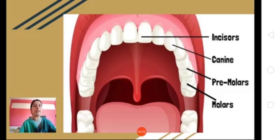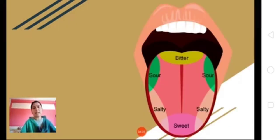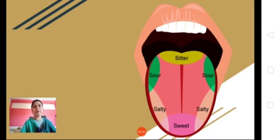You can see the position and types of teeth present inside the buccal cavity. Along with the salivary glands and teeth, we also have a muscular organ called the tongue. You can see in this diagram the location of taste buds in different regions of the tongue.